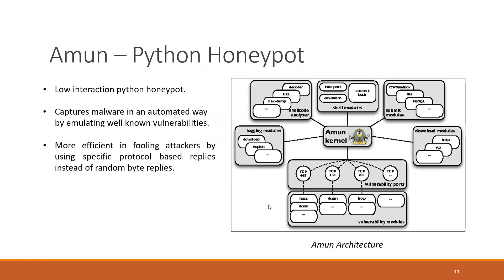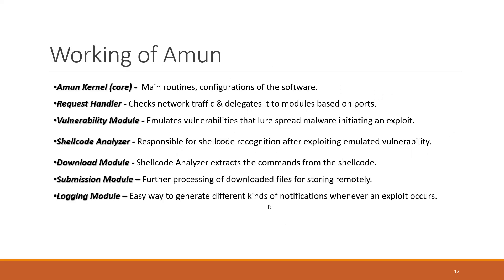The next honeypot is Amun. Amun was the first Python-based low interaction honeypot. It followed the concepts of Nepenthes but is more sophisticated and has easy maintenance. It captures malware in an automated way by emulating well-known vulnerabilities. It is more efficient at fooling attackers by using specific protocol-based replies instead of random byte replies. On the right we have the architecture of Amun.